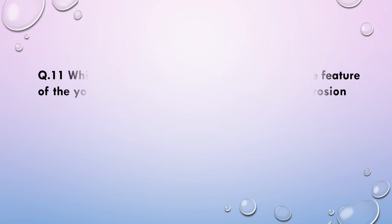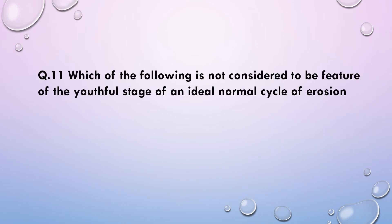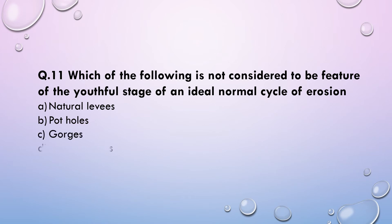Next question: Which of the following is NOT considered a feature of the youthful stage of an ideal normal cycle of erosion? Options: (a) natural levee, (b) potholes, (c) gorge, (d) river capture. The correct answer will be natural levee, as it is primarily a depositional landform created by rivers in the old stage.